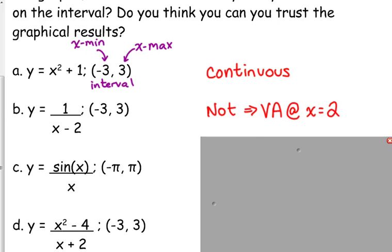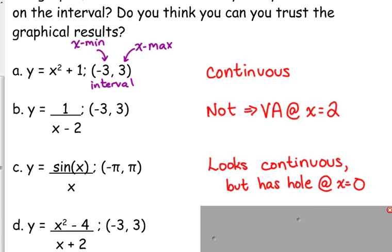How about sine of x over x? It looks continuous. We've been dealing with this function quite a bit. What's the problem with sine of x over x? When do we have a problem? Why do we have to memorize this limit right here? Because when we plug in zero, we get zero over zero, there's a hole. There's a hole at x equals zero.